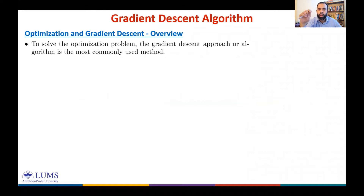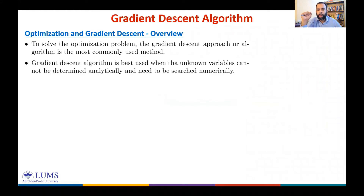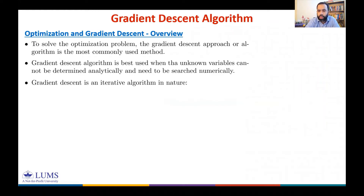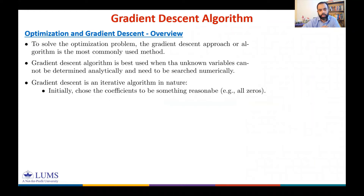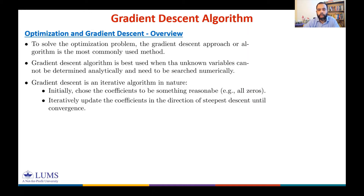We will define the computational cost for obtaining the solution analytically versus the cost associated with gradient descent. Gradient descent is an iterative algorithm — it initially chooses coefficients, for example all zeros, and then iteratively updates them in the direction of steepest descent.